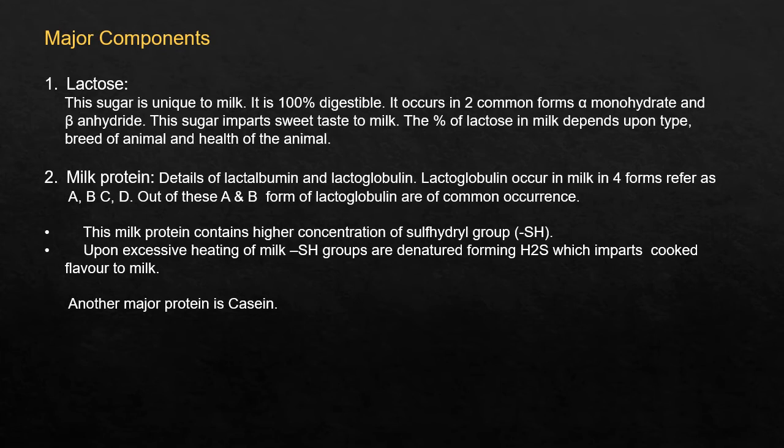Lactose is a sugar unique to milk and is 100% digestible. It occurs in two common forms: alpha monohydrate and beta anhydride. This sugar imparts sweet taste to milk, and the percentage of lactose in milk depends on the type, breed, and health of the animal.